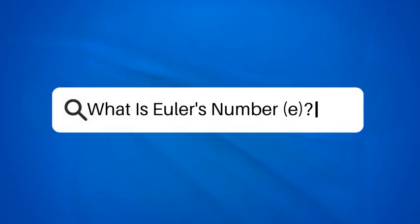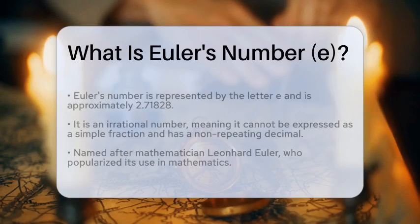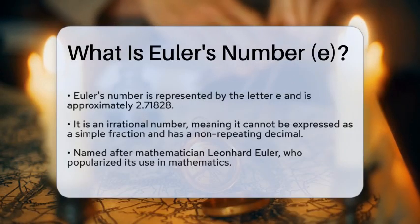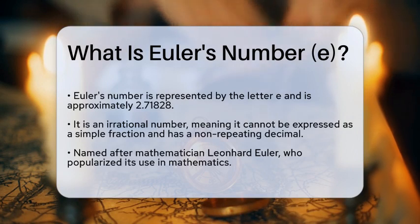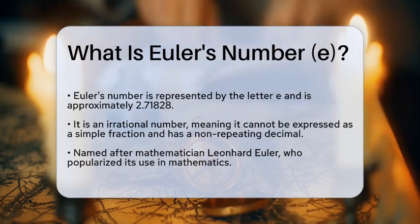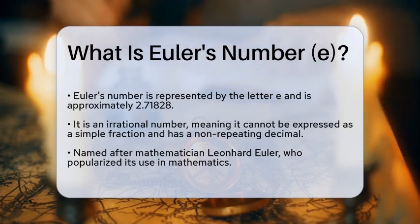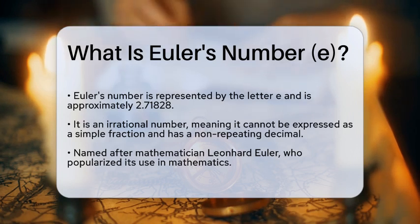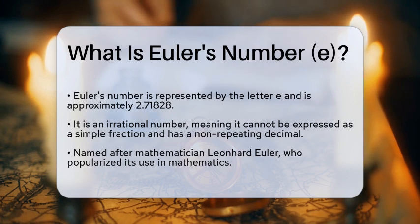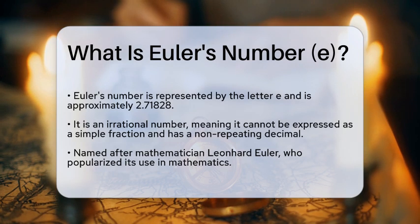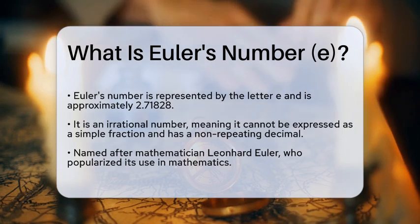What is Euler's number e? Have you ever wondered about the number that plays a crucial role in mathematics and science? This number is known as Euler's number, represented by the letter e. It is approximately equal to 2.71828. This fascinating constant is not just a simple number — it is an irrational number, meaning it cannot be expressed as a simple fraction, and its decimal representation continues infinitely without repeating.